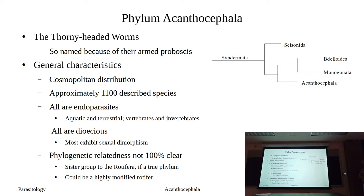All of our members are dioecious, which is very similar to our nematodes. All of them will exhibit sexual dimorphism, some of them more pronounced than others. Even with our nematodes we can be dimorphic — some species are more dimorphic than others, and the same is true here with acanthocephalins.